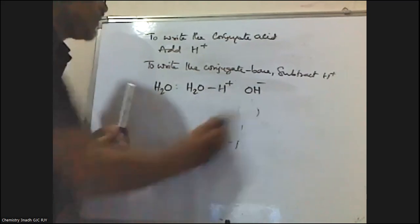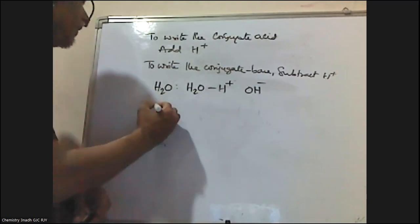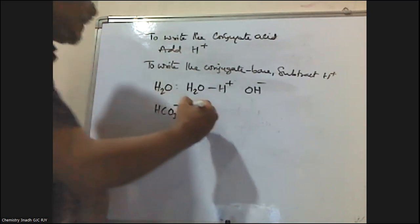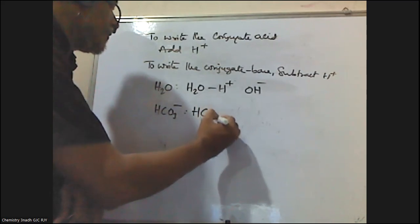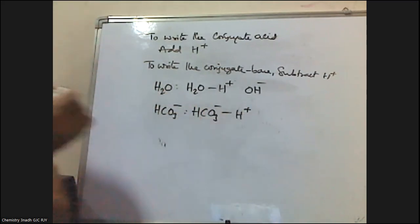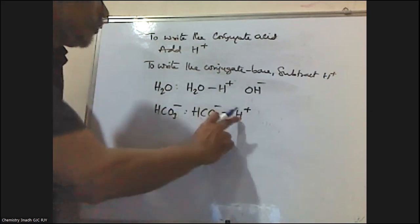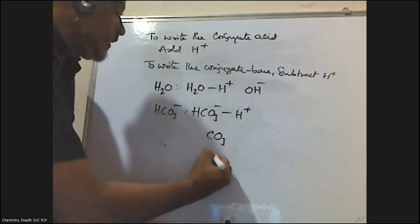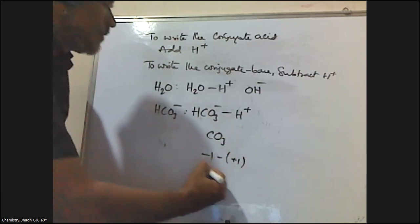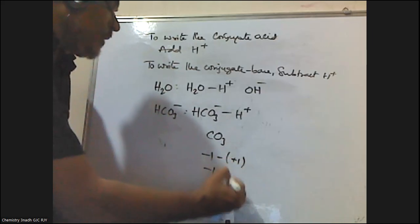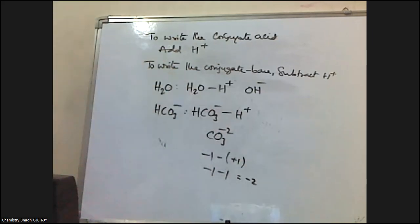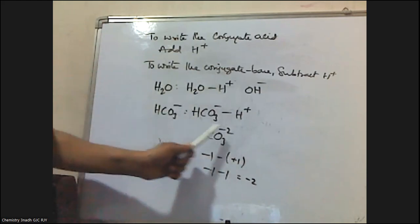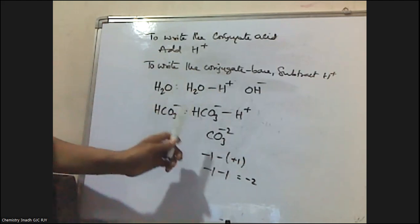Let me take one more example. If the species given is HCO3⁻, what is its Conjugate Base? HCO3⁻ minus H⁺: there is already one hydrogen, and if you remove it, you get CO3. For charges: HCO3⁻ has minus one, minus plus one gives minus two. So the Conjugate Base of HCO3⁻ is CO3²⁻.